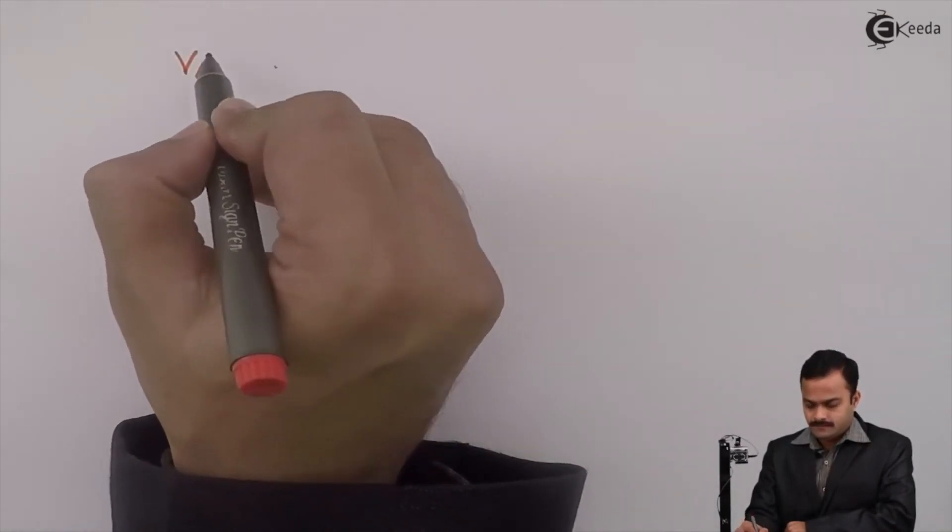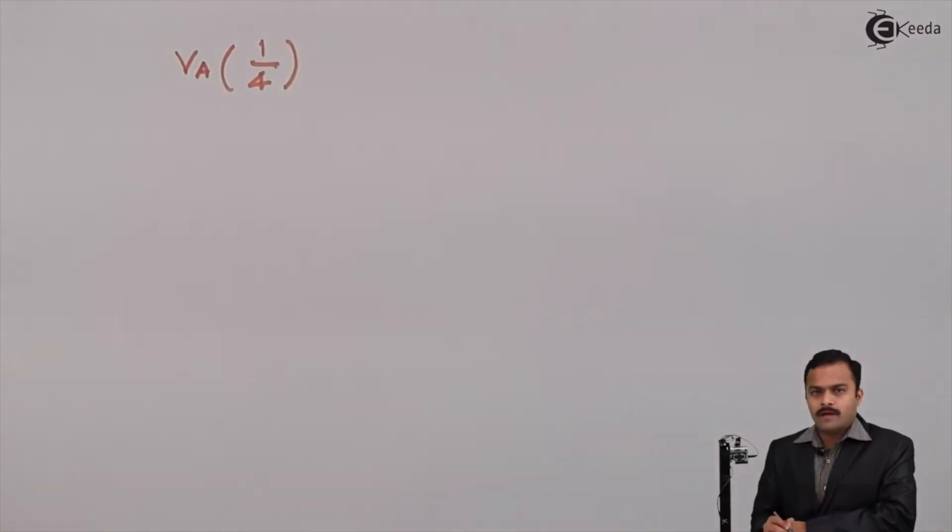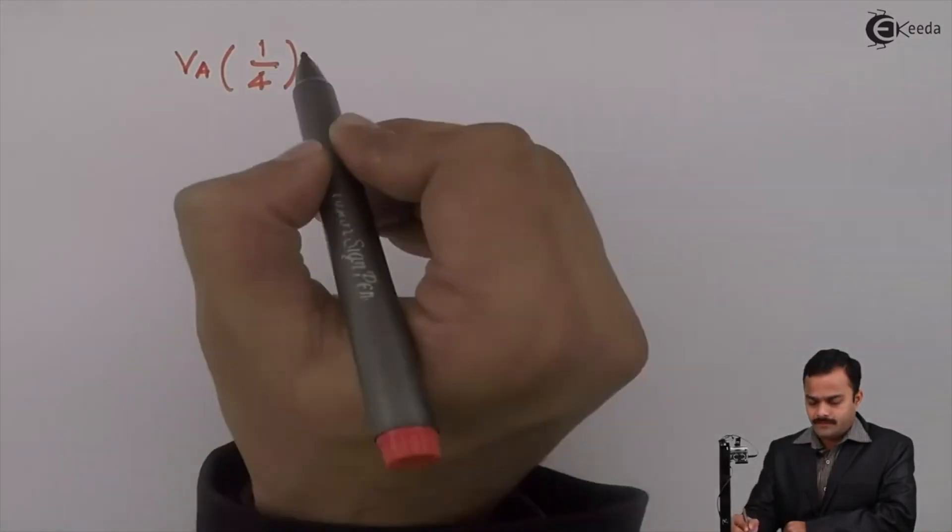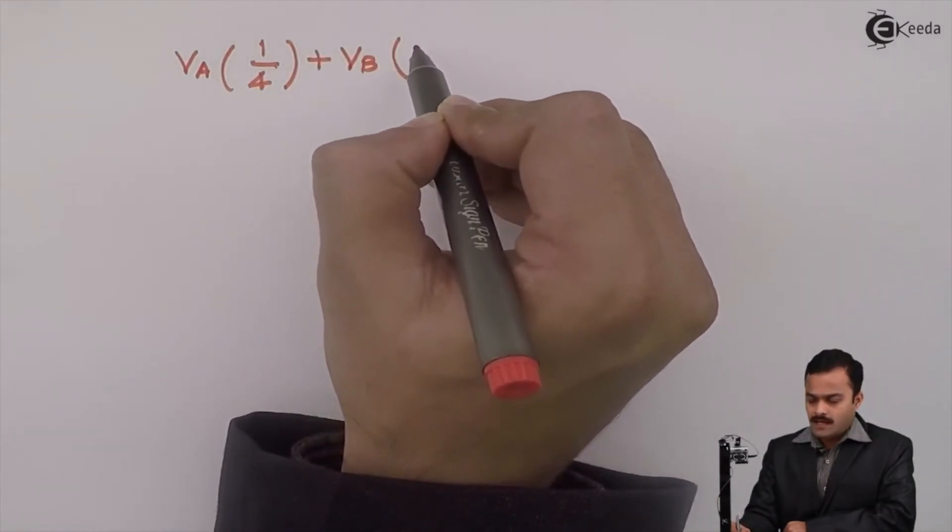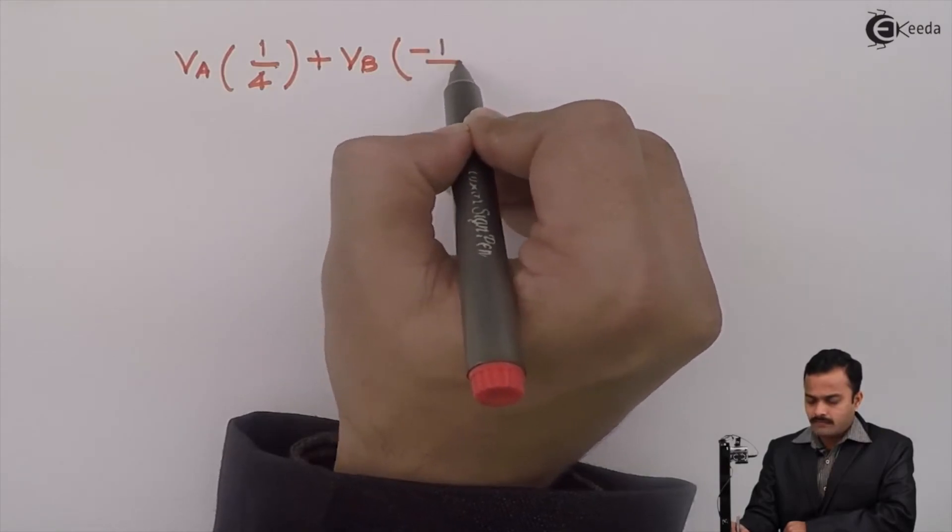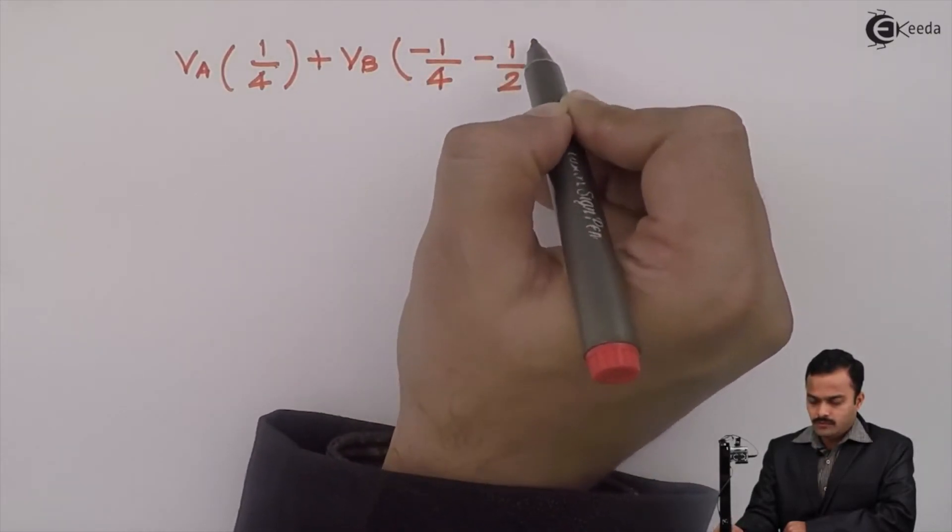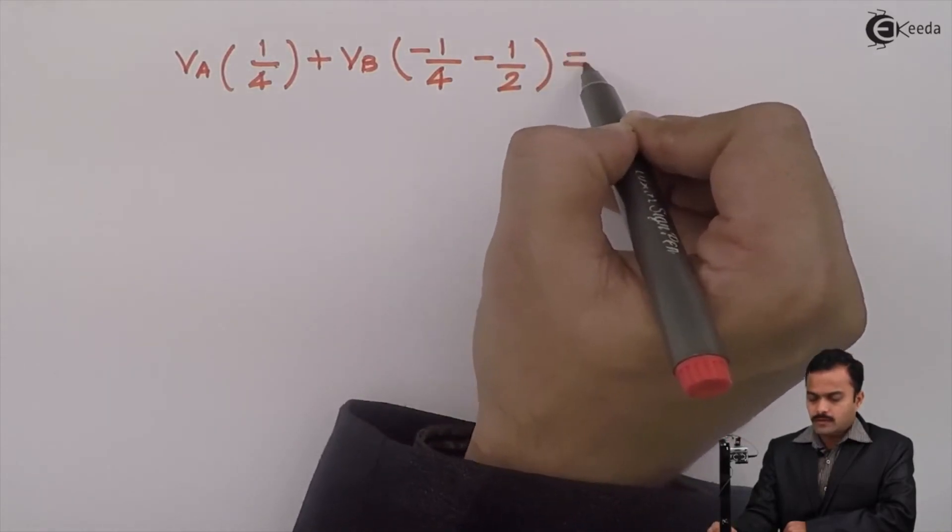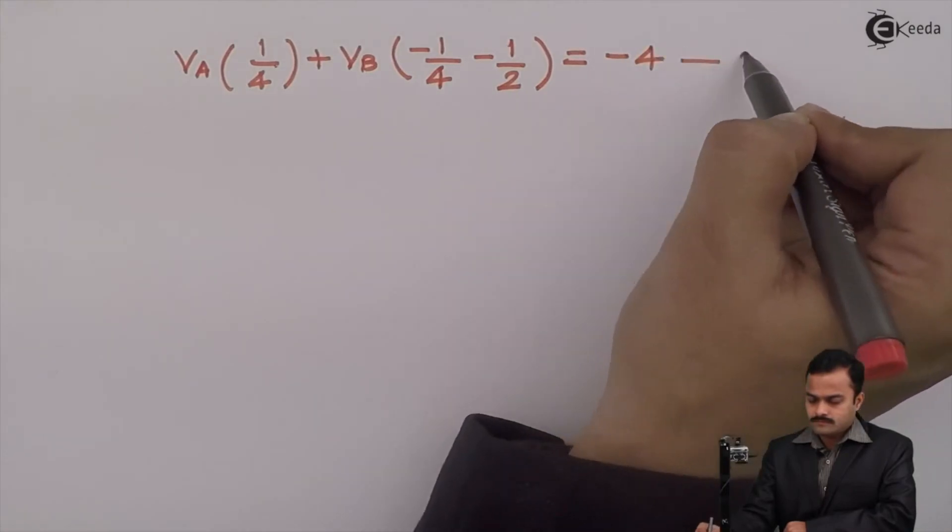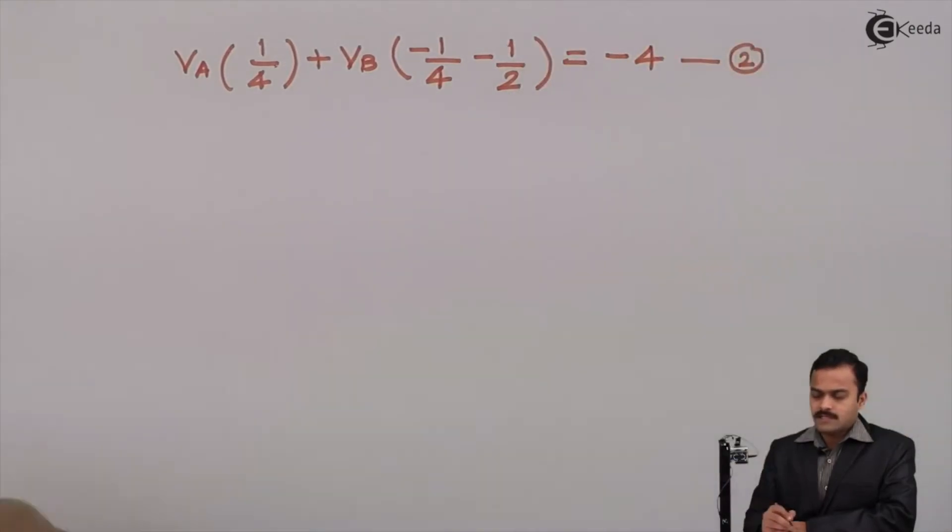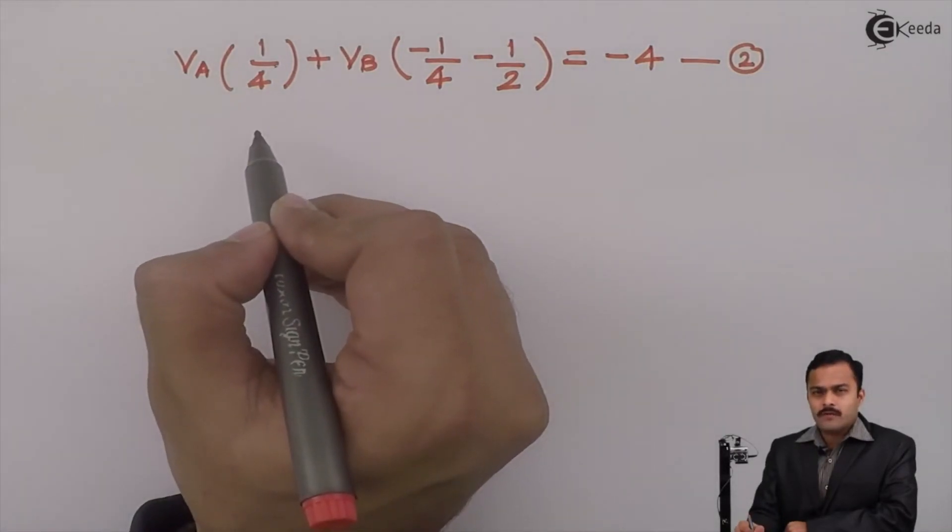Let's simplify this equation. So I will have VA 1 by 4 is the coefficient of VA. VB I will have coefficients minus 1 by 4 and minus 1 by 2 equal to constant that will be minus 4. This will be equation number 2. Now I can solve equation 1 and 2.